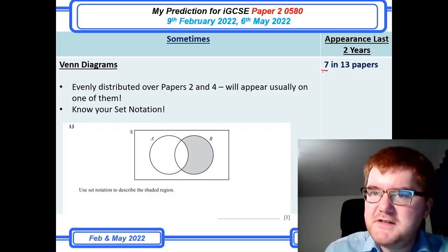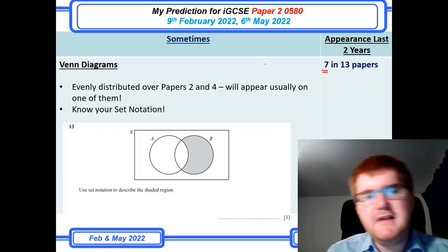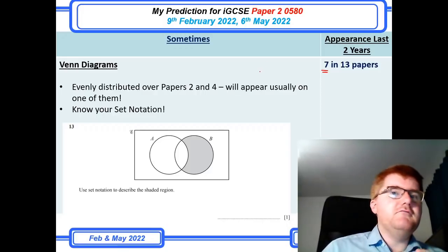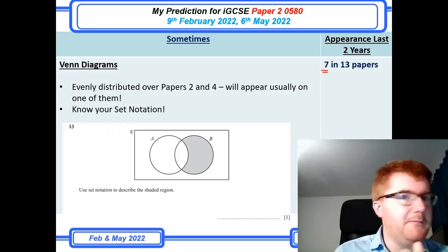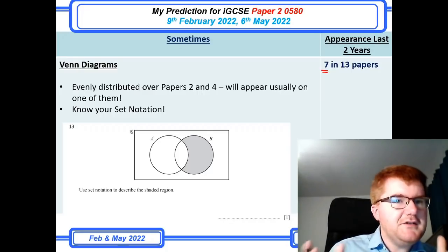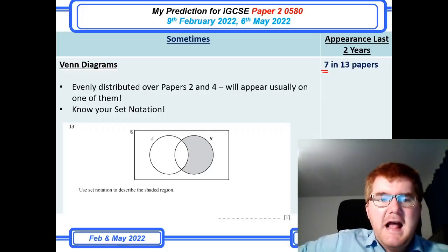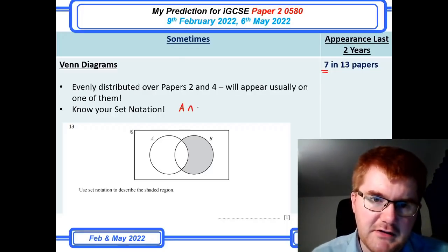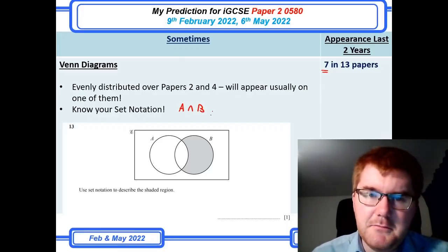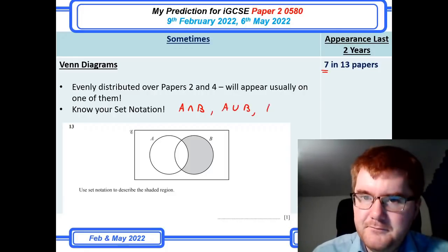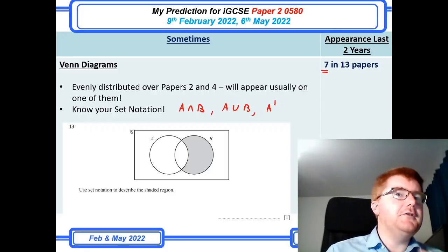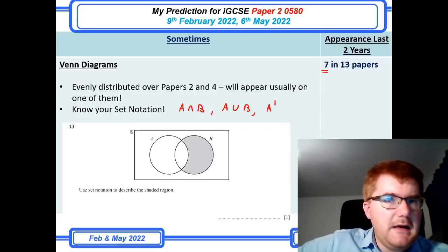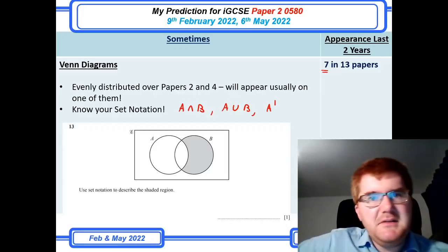Venn diagrams comes up 7 in 13 papers, evenly distributed over papers two and four, and will usually appear on one of them. So even if you don't revise it for this particular paper, it's often going to come up on paper four. Make sure you revise this topic and know your set notation — A intersection B, A union B, not A, and so on. It can vary from one mark to a more extended question, sometimes tied in with probability too.